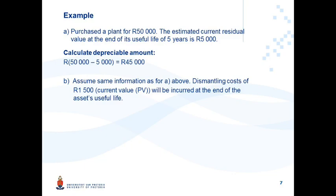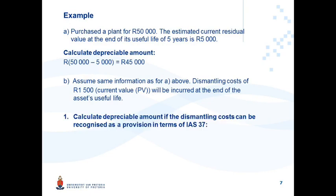Now assume the same information as in (a), but there are also dismantling costs of 1,500 rand to be incurred at the end of the asset's useful life — that 1,500 rand is the present value. Scenario 1: if these dismantling costs can be recognized as a provision in terms of the standard on provisions, it is a current obligation, so you capitalize the 1,500 to the asset's cost. Deducting the residual value of 5,000 gives a depreciable amount of 46,500 rand.